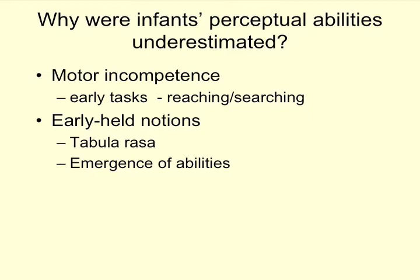So why were infants' perceptual abilities underestimated? Why did William James think that it was one big, blooming, buzzing confusion? Well, the first reason was motor incompetence. Early tasks for infants to show what they could do relied on them actually reaching their hand out and grabbing something, or searching for something physically, which required motor skills that were lagging behind their understanding. Another idea is the tabula rasa — the blank slate argument — that babies are born a blank slate and need to be written on, told things, given knowledge. When they're infants, they haven't had a chance to get that knowledge. The other piece is the way that their abilities emerge: it's not even, it doesn't look logical, and so babies were perceived as stupid.